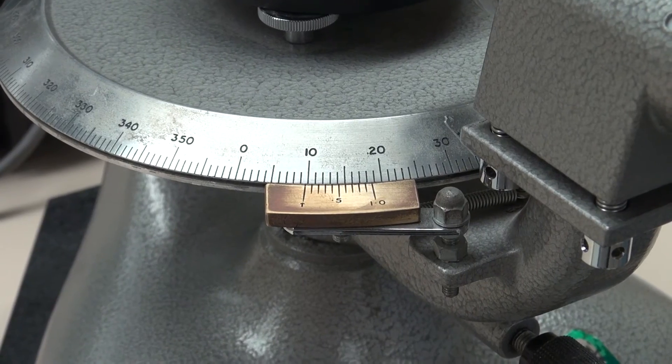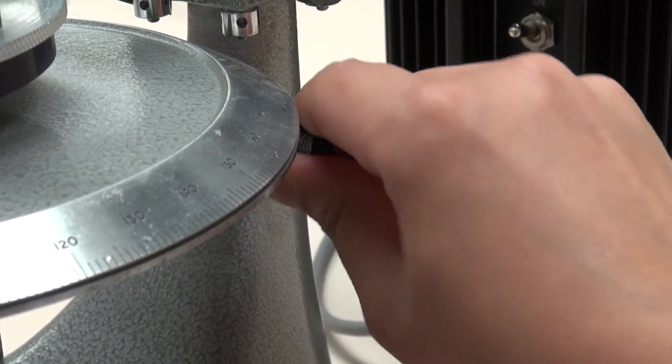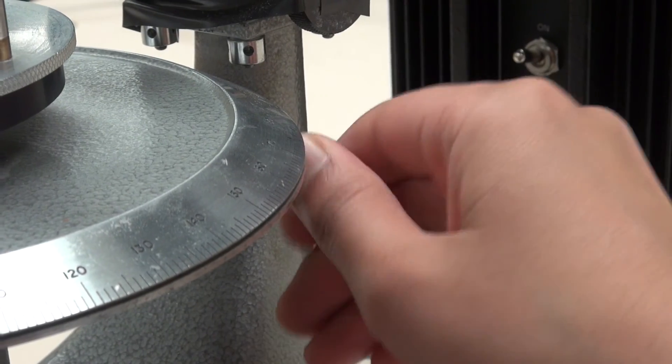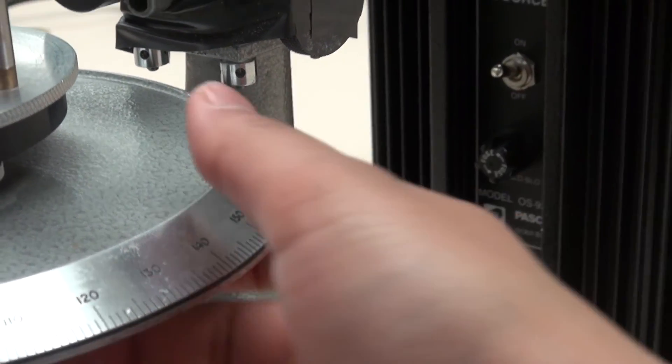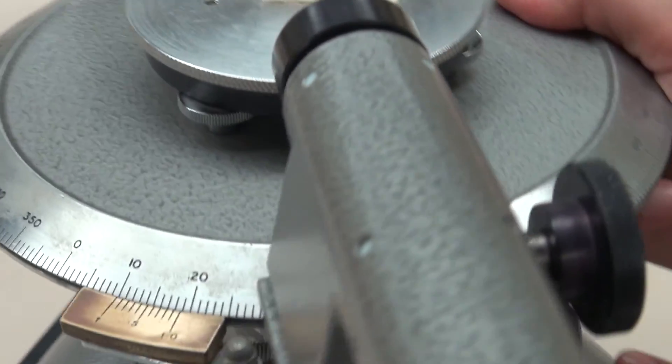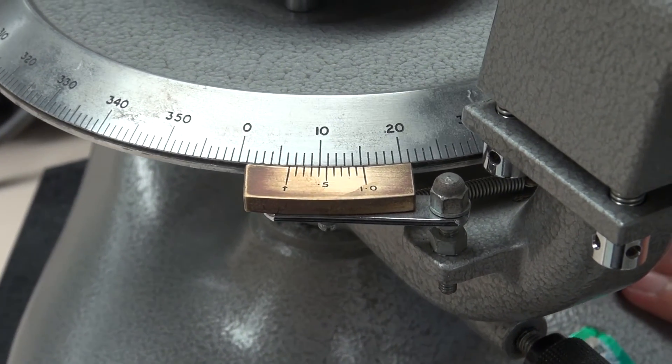The vernier should now read zero. If it does not, unlock the spectrometer table using the clamping screw under the collimator, adjust the spectrometer table to read zero, and lock it into position for the remainder of the experiment.